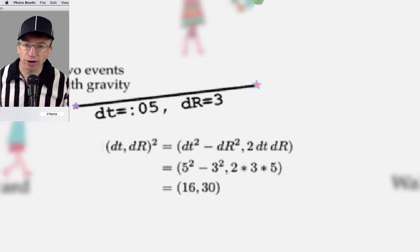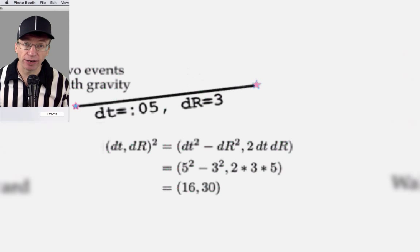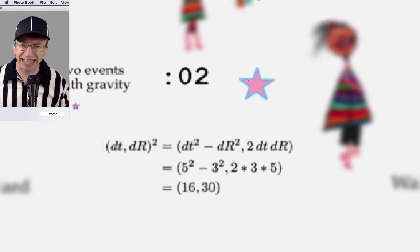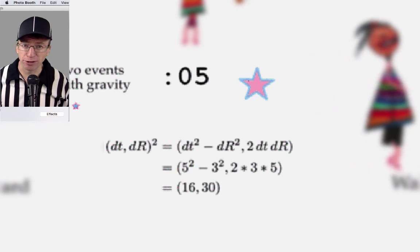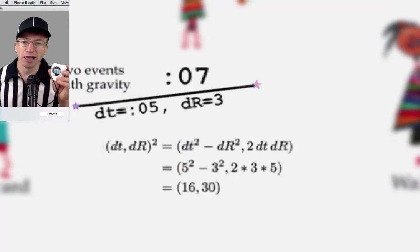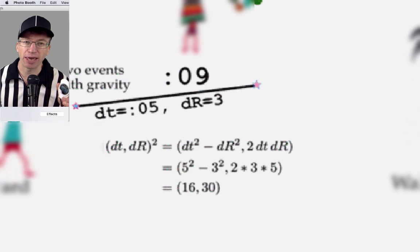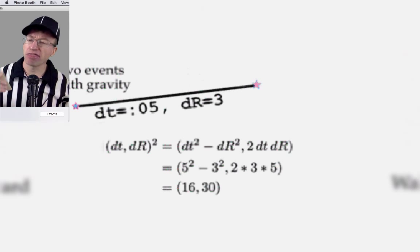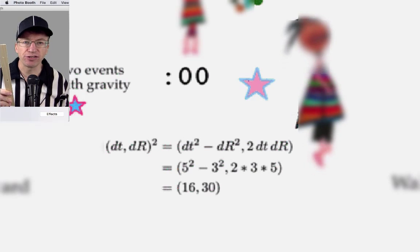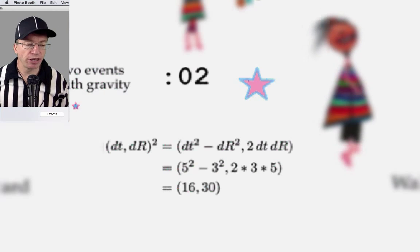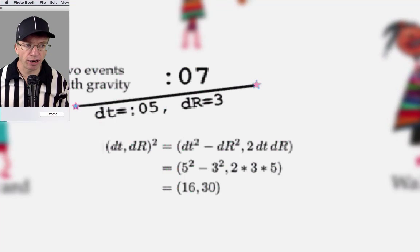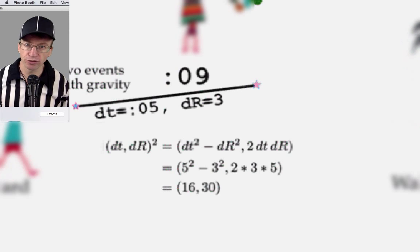So, this dt squared minus dr squared is called the interval. Now, I like to actually make things really concrete. And so, I made up some numbers. I said, well, that time, let's call it 5, OK? That time, dt. And let's say a 3 for the space difference of dr. So, the interval becomes 5 squared 25 minus 3 squared 9 equals 16.